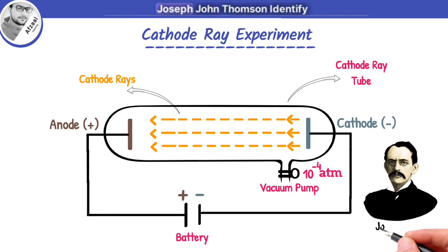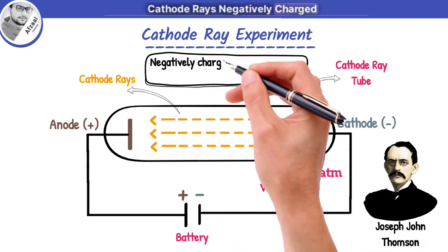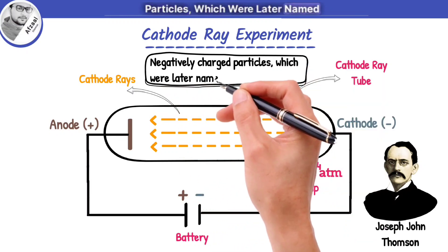In 1897, Joseph John Thomson identified cathode rays as negatively charged particles, which were later named electrons.